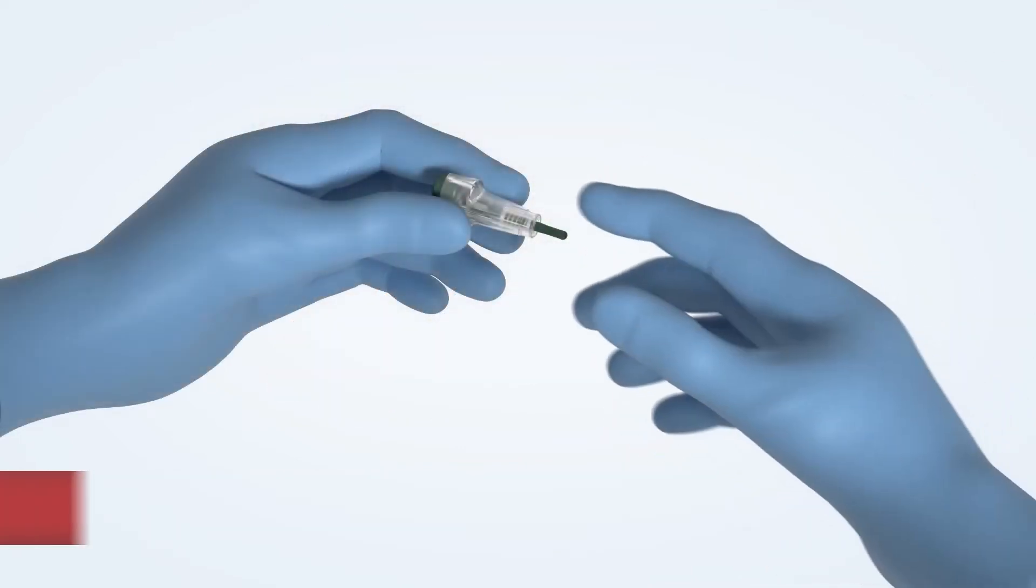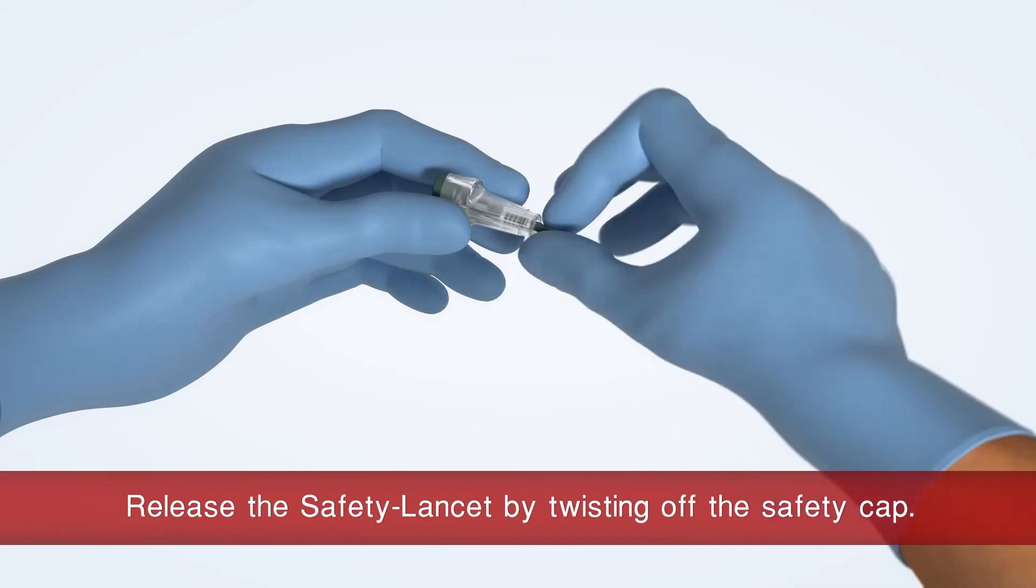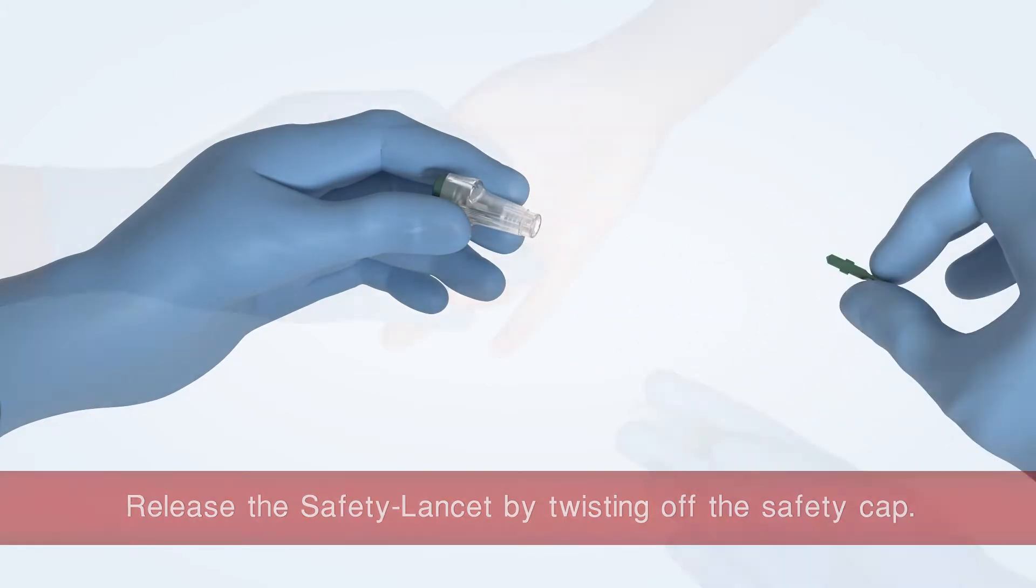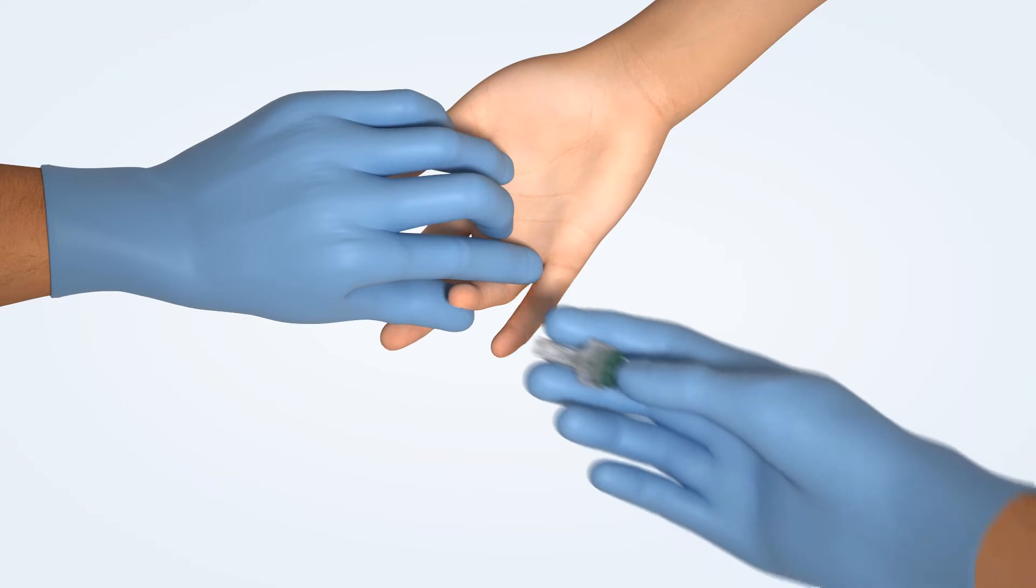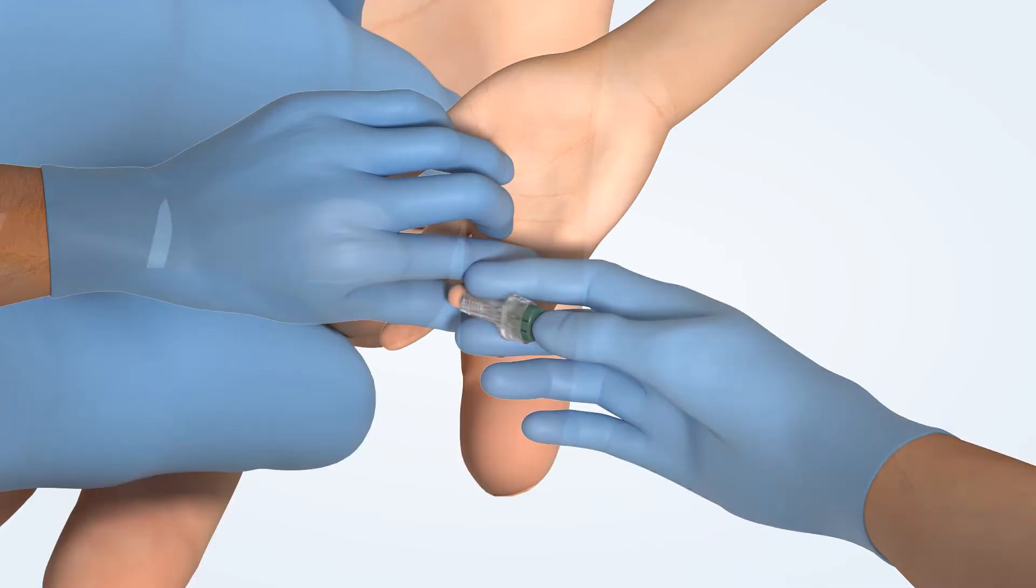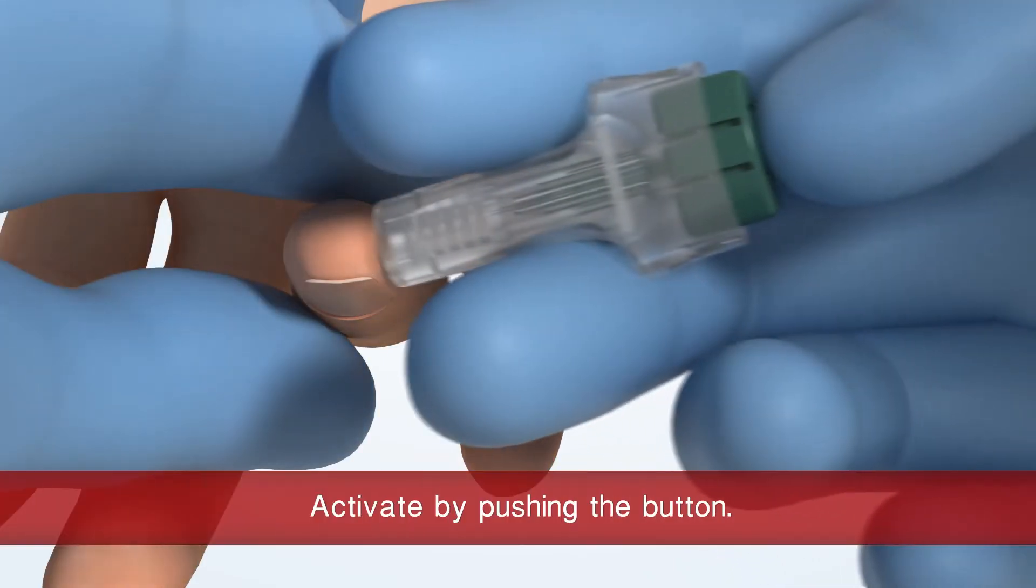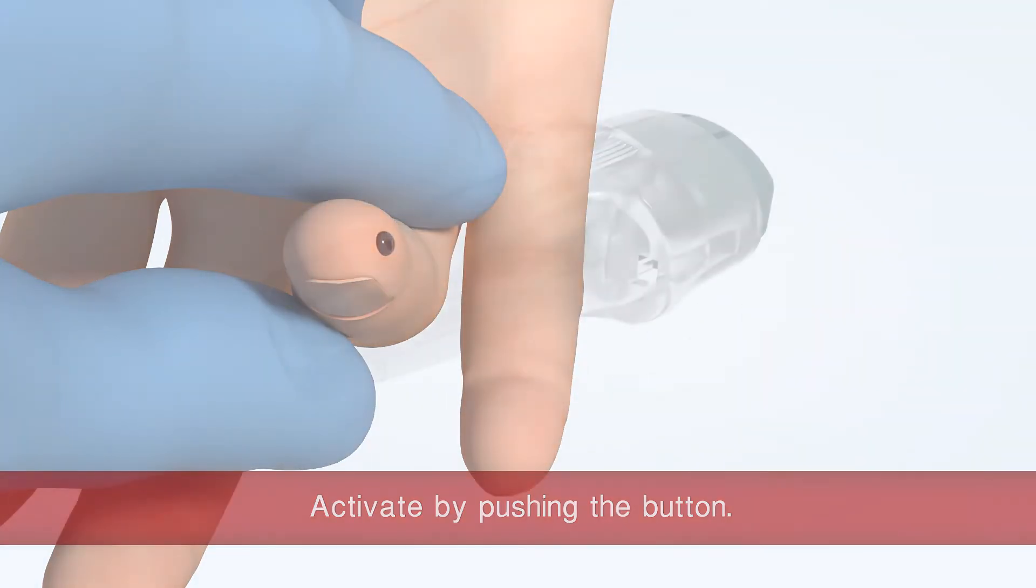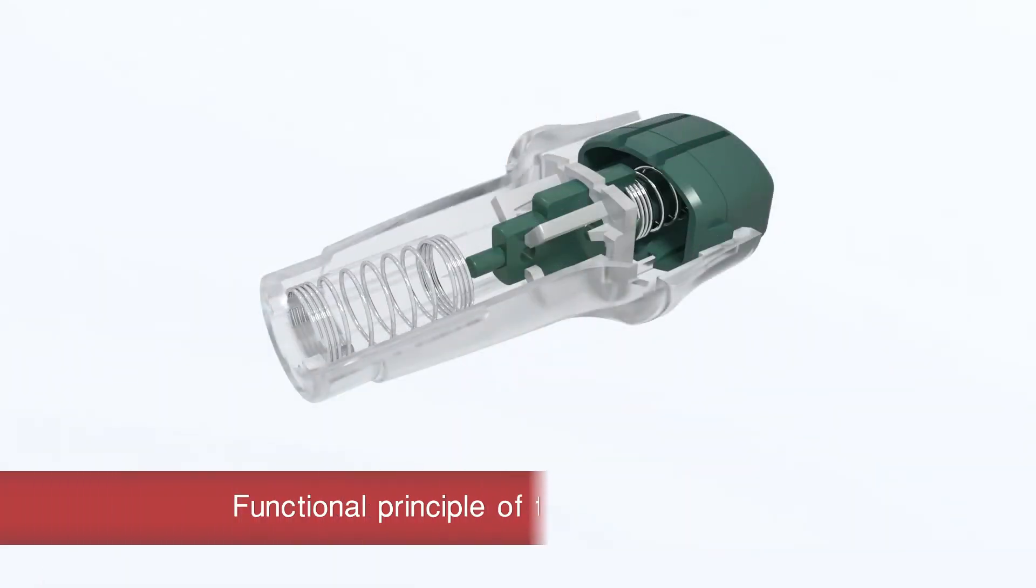Take the safety lancet and twist off the safety cap. Place the safety lancet on the suitable puncture site and activate it by pushing the button. Please see the functional principle of the safety lancet.